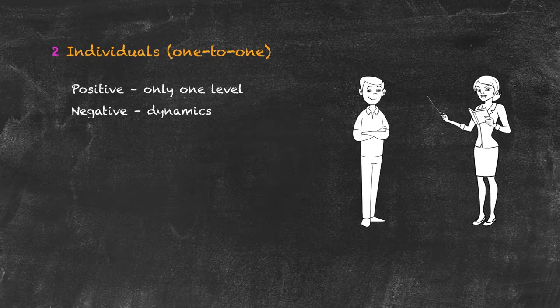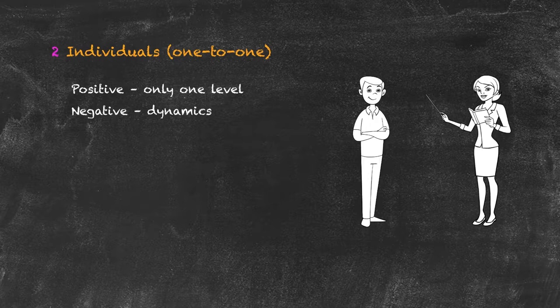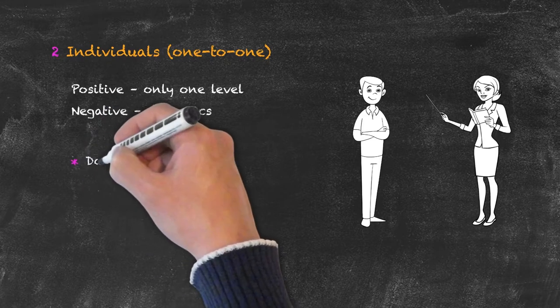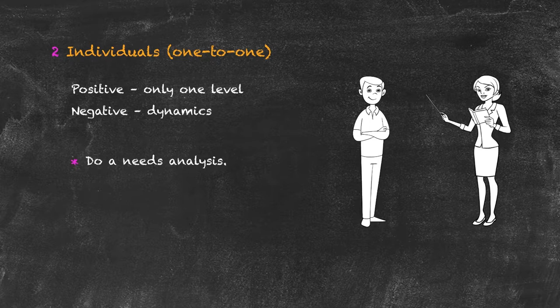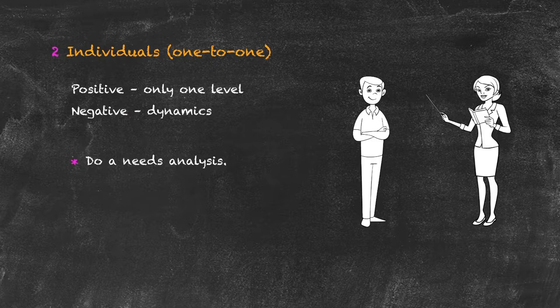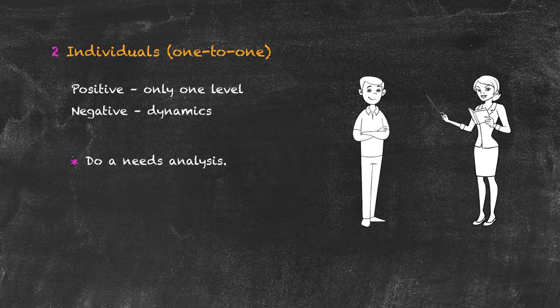So here are a few ideas just to bear in mind when you are teaching one-to-one. Firstly, because you only have one student, it is quite important that before you actually start the course, you do some form of needs analysis. There's an example of a needs analysis in your unit. If you have a look at that, you'll see that the idea is to find out what the student already knows, what they are going to need to know from their English learning programme, and then from that needs analysis, start to create a syllabus.